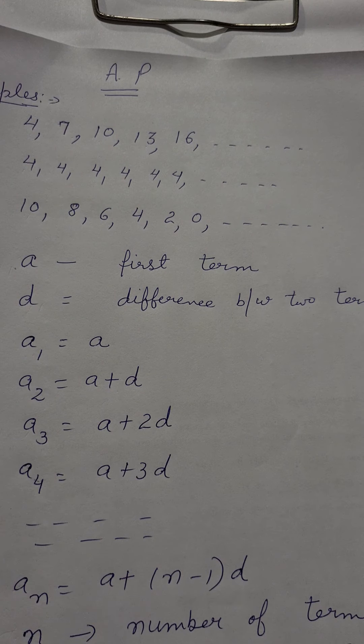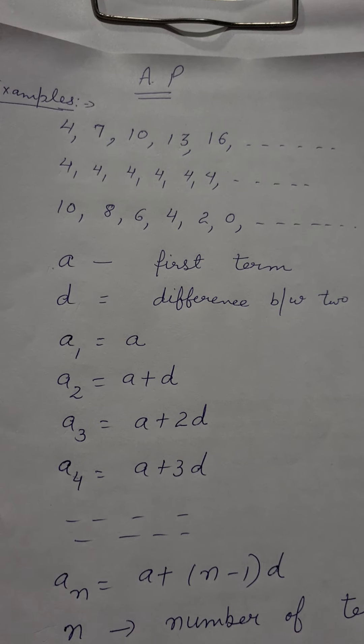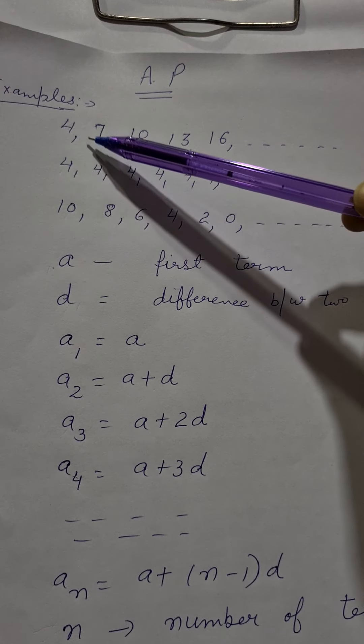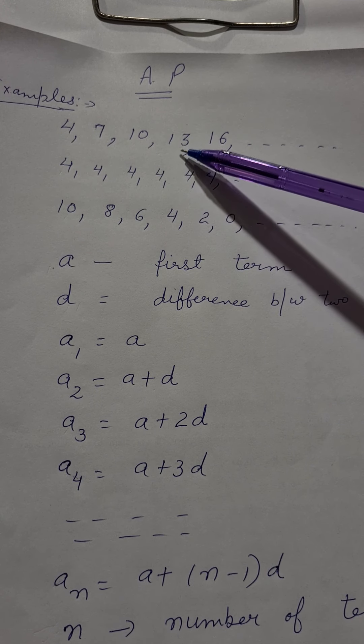4, 7, 10, 13 and 16. So what is the first number? It is 4. Next number, 3 add. Next number, 3 add. Next number, 3 add.